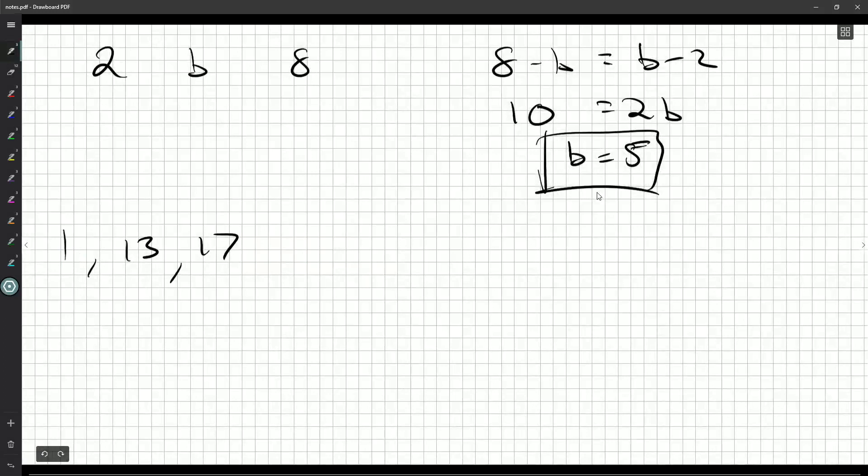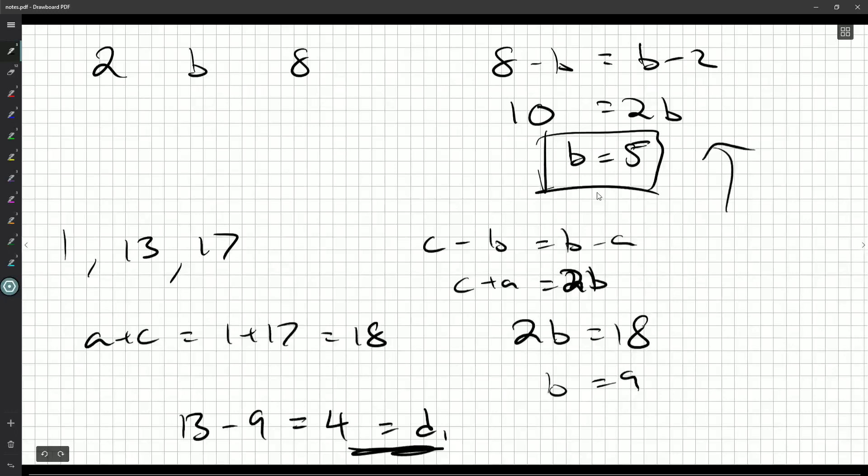Well, if C minus B is equal to B minus A, what's the relationship between C and A? Well, C plus A is equal to 2B. We even sort of used that up here. So for D1, we'll get A plus C is equal to 1 plus 17, which is 18. So 2B is equal to 18. B should be 9. So 13 minus 9 is equal to 4, and that should be my D1. So I decrease 13 by 4 to 9. I get 1, 9, 17. That's an arithmetic sequence.